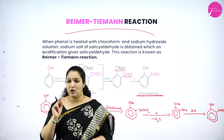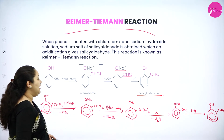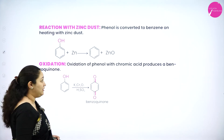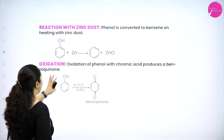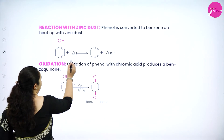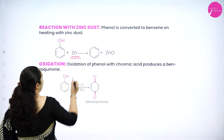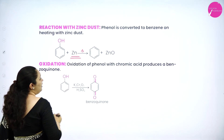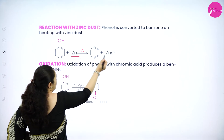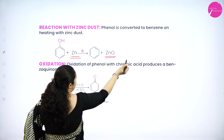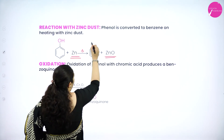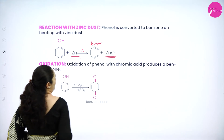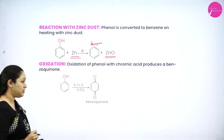Next is the reaction with zinc dust. If we take phenol and heat it with zinc, zinc takes up the oxygen and moves out as zinc oxide, and we get benzene. It is a simple reaction.